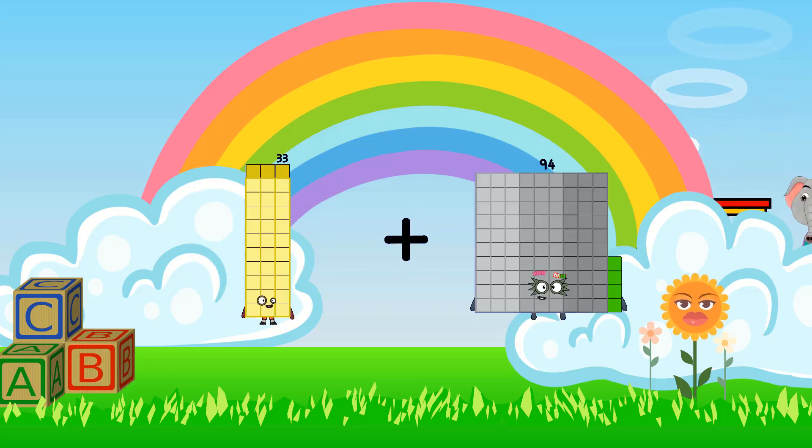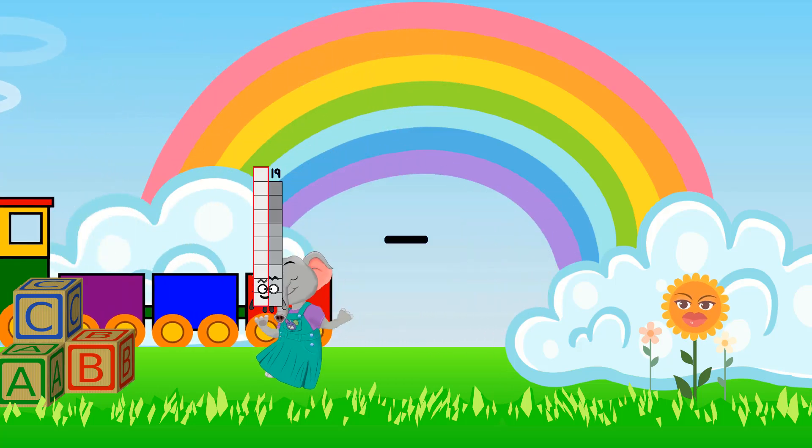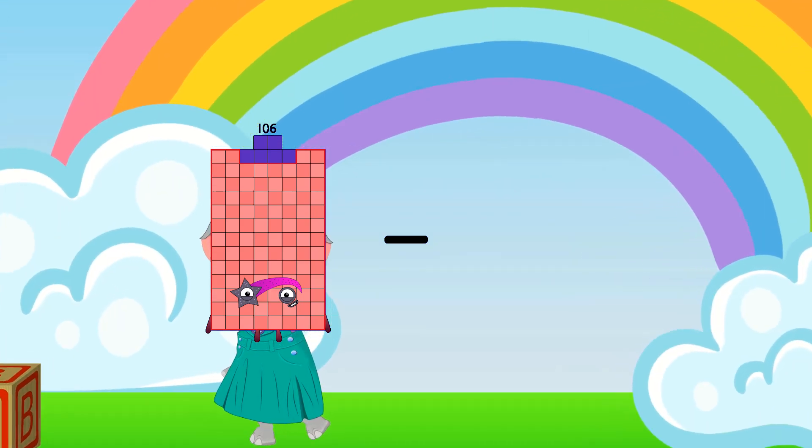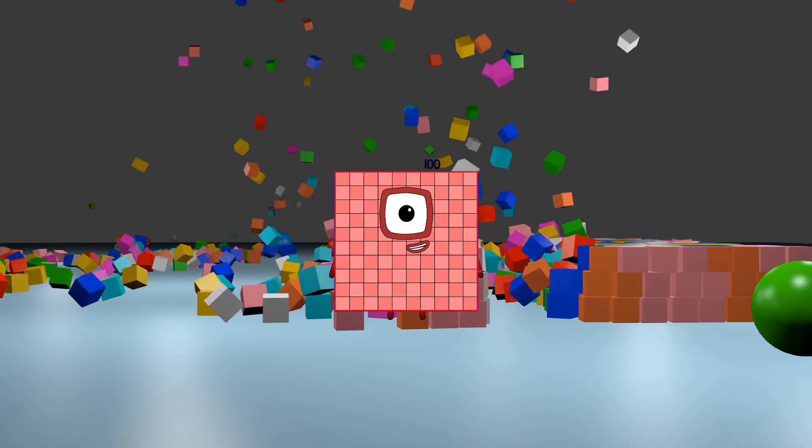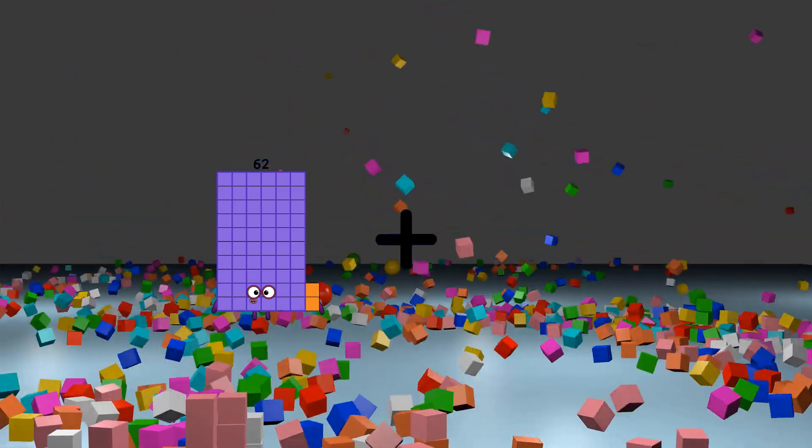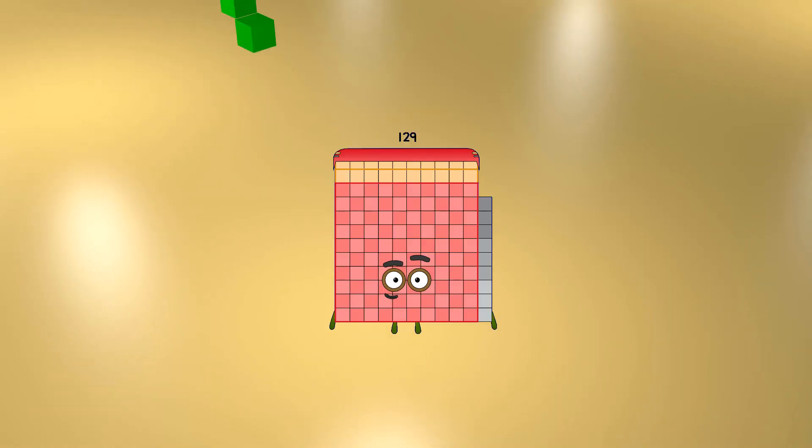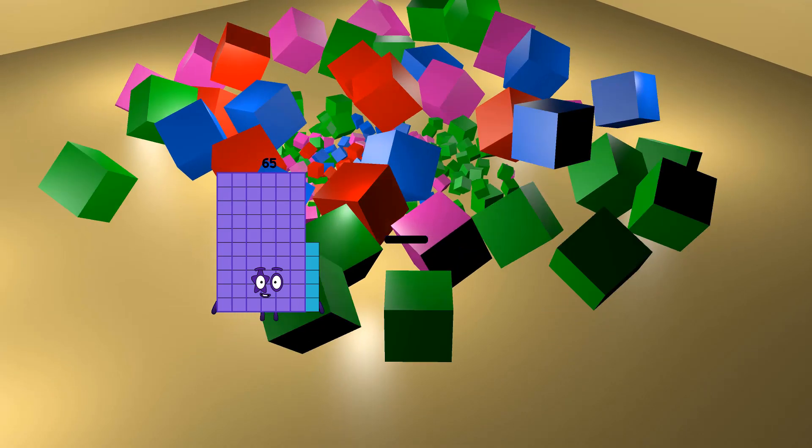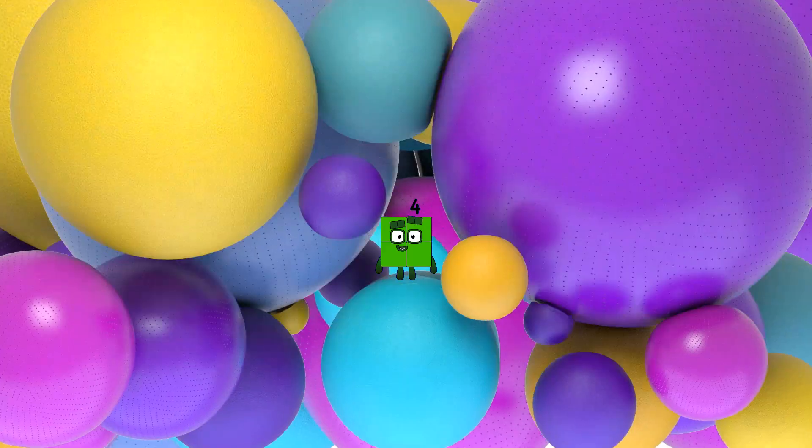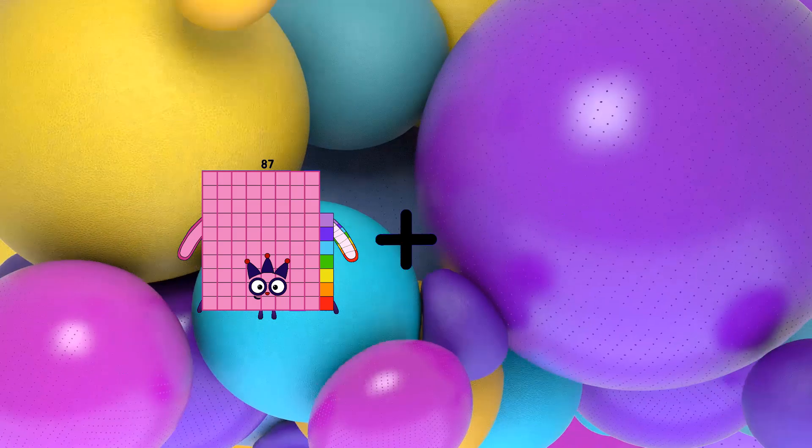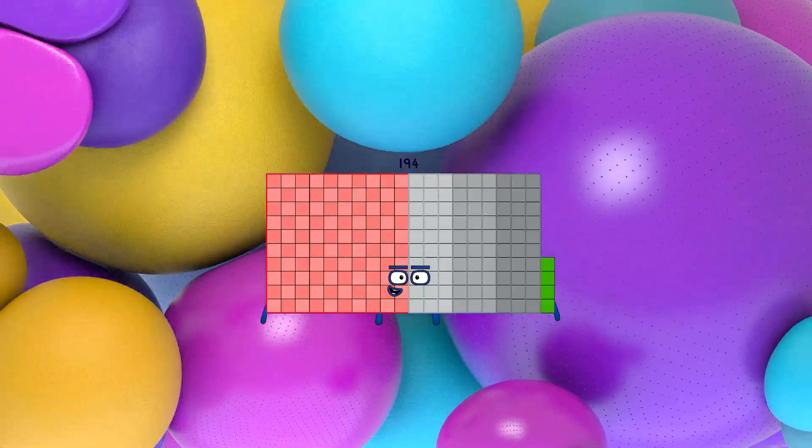33 plus 14 equals 47. 106 minus 6 equals 100. 62 plus 67 equals 129. 65 minus 61 equals 4. 87 plus 107 equals 194.